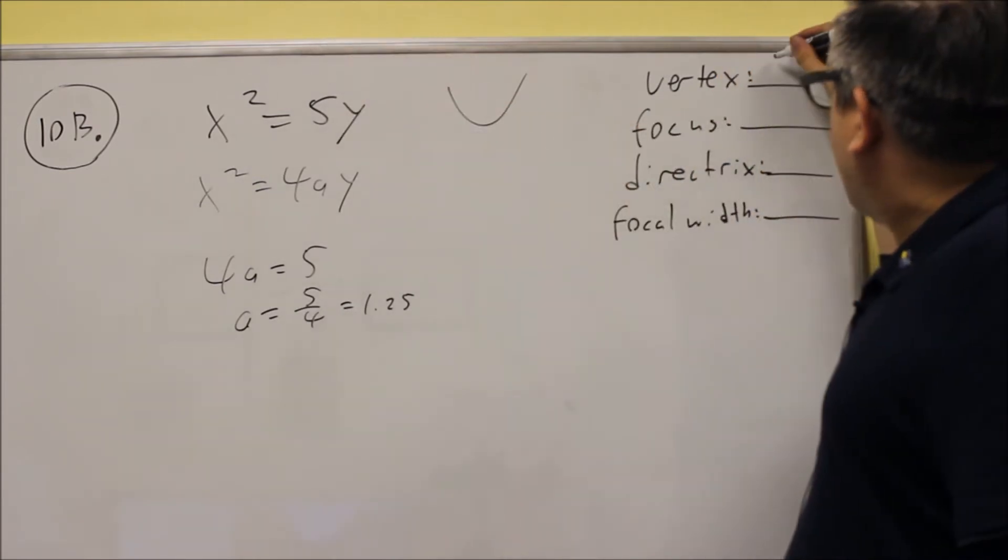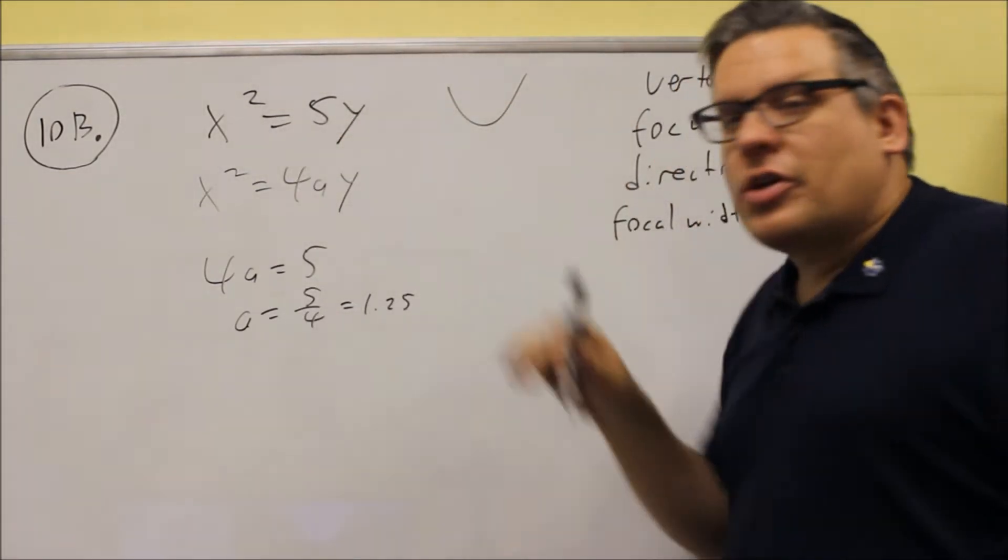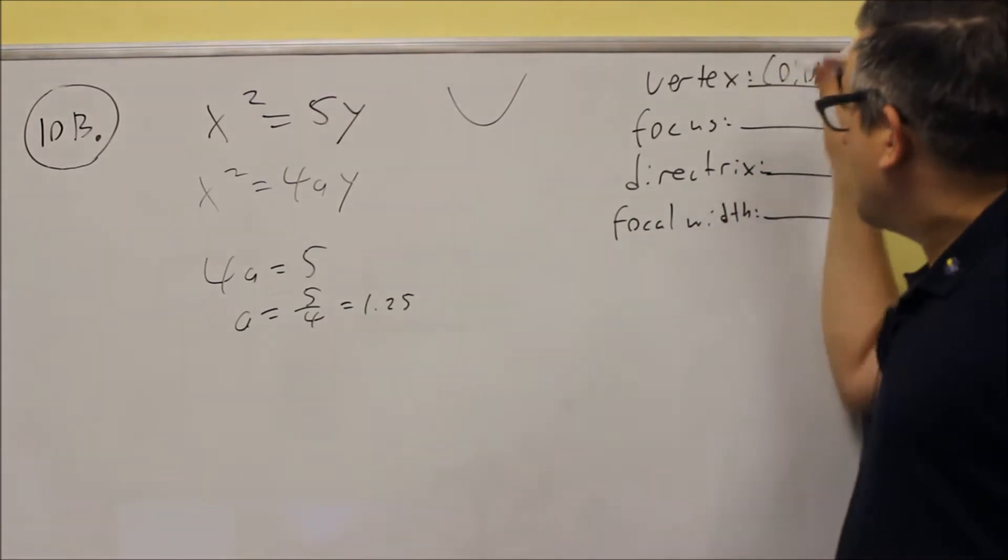Now, for the center, or the vertex, that's going to be at (0,0), because we don't have any parentheses around the x and the y, so it's going to be (0,0).